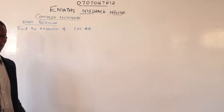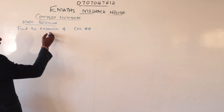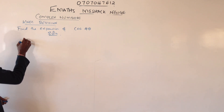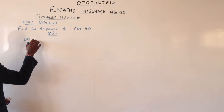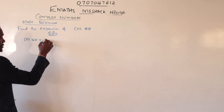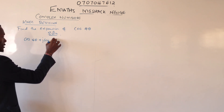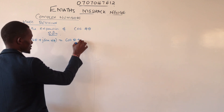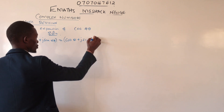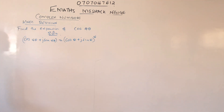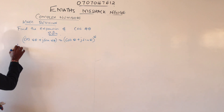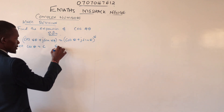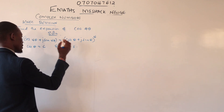Find the expansion of cos(4θ). We know this will be expressed as cos(4θ) + j·sin(4θ) equals (cosθ + j·sinθ) to the power 4. We let cosθ equal c and sinθ equal s.